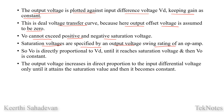The output voltage swing rating of an op-amp is given in the data sheet. This corresponds to the saturation voltage. Output voltage is directly proportional to input differential voltage until it reaches the saturation voltage, then it becomes constant. The output voltage increases in direct proportion to the input differential voltage only until it attains the saturation value, and then it becomes constant. This is the voltage transfer curve.